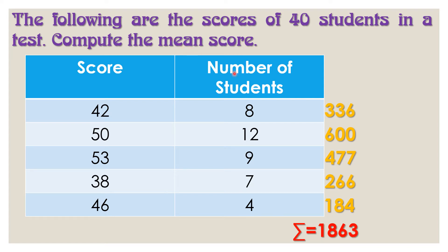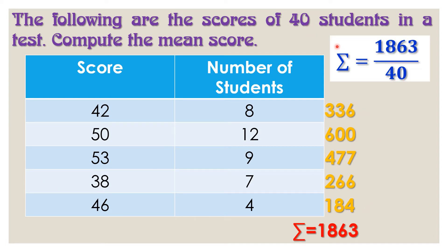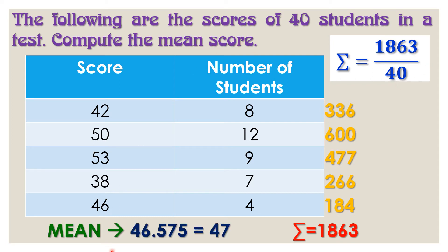This value will be used to compute for the mean score. We're going to divide this by the total number of students. That is 1863 divided by 40. Our mean score is 46.575 or 47. So, have you followed all the steps I did? I hope you do!